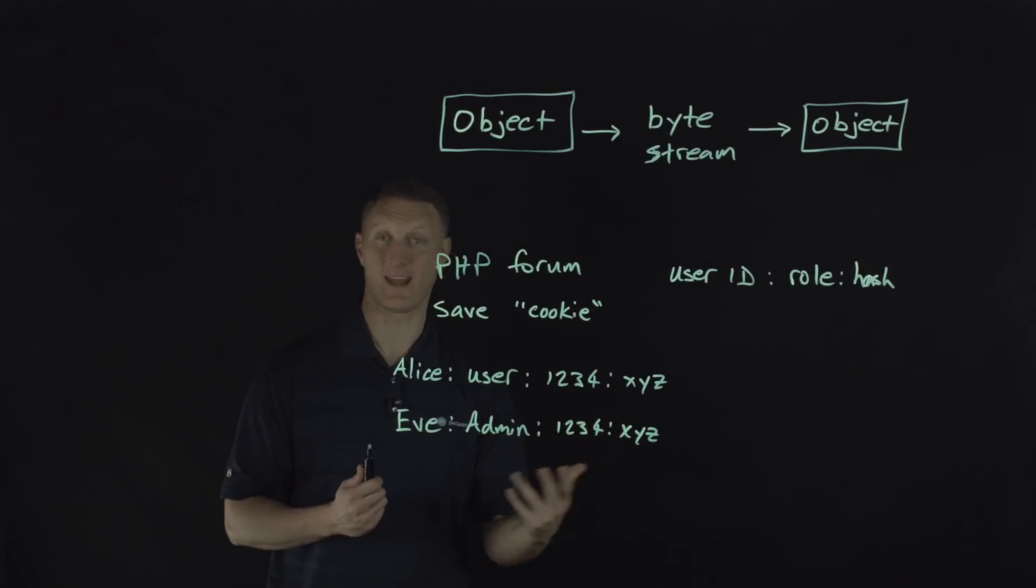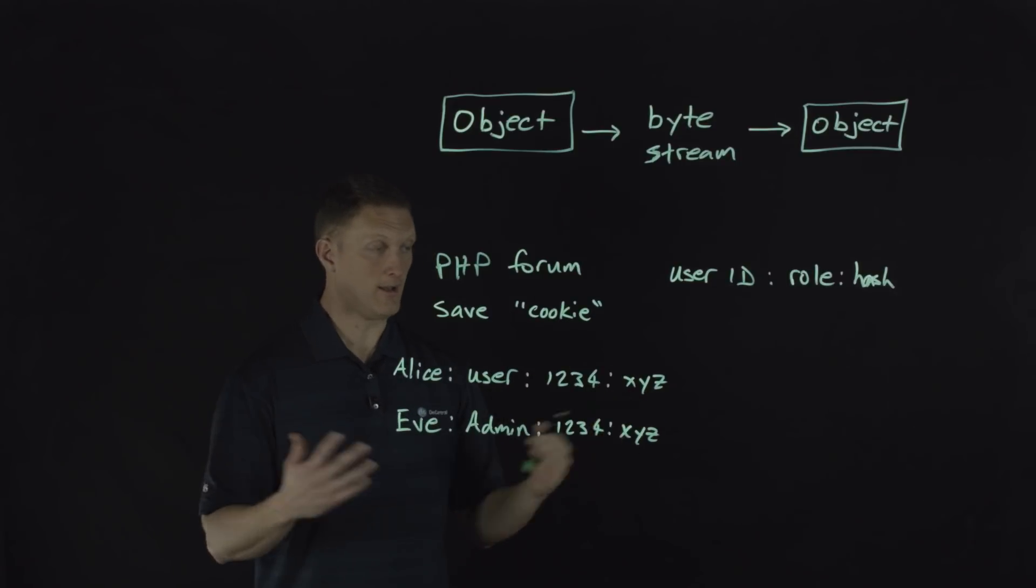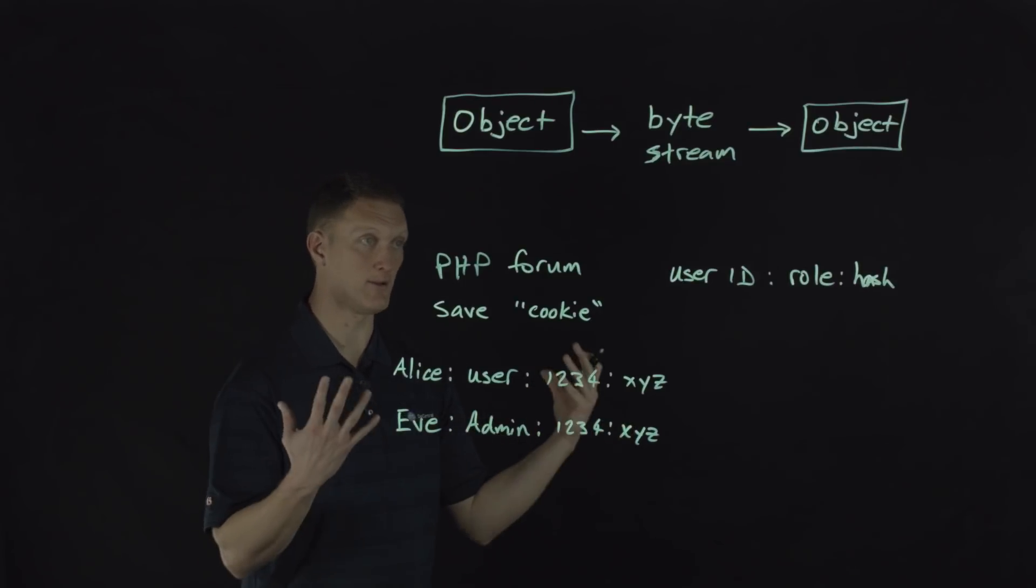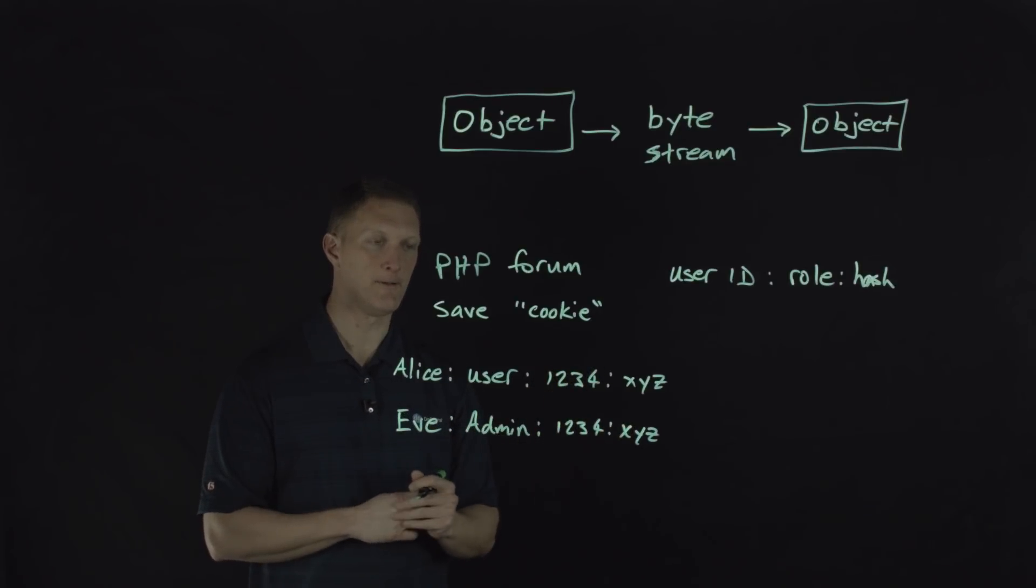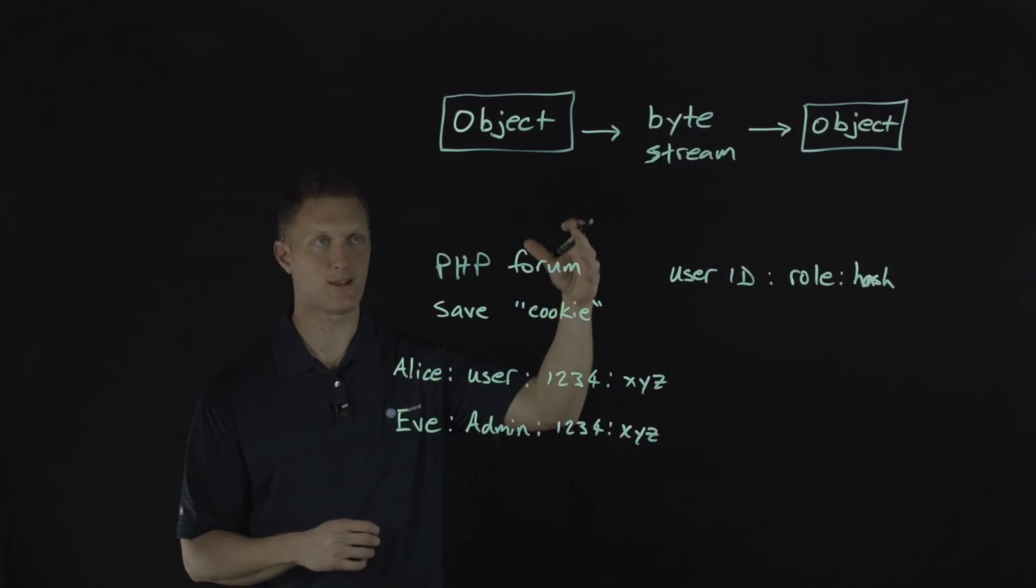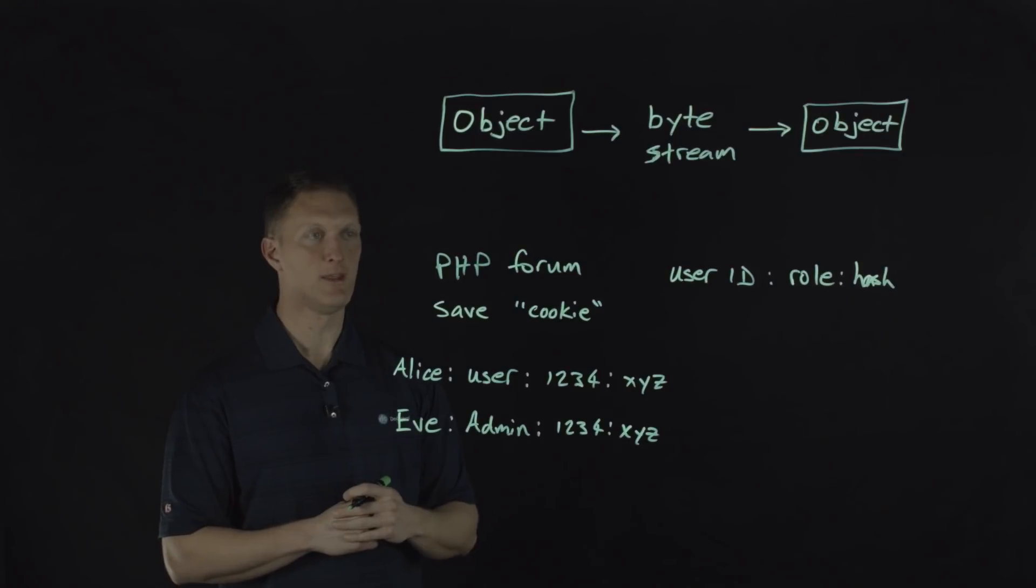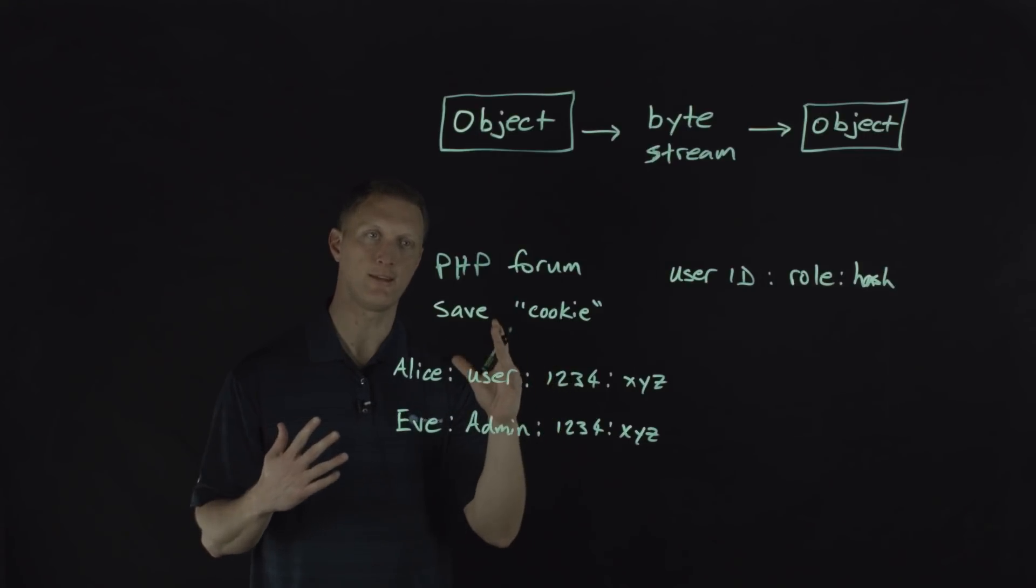So what are some of the things that could happen with this? Well, ultimately you could have things like remote code execution that could start happening here. That would be a really bad thing, of course. You could do some denial of service attacks using vectors like this. Any number of things.